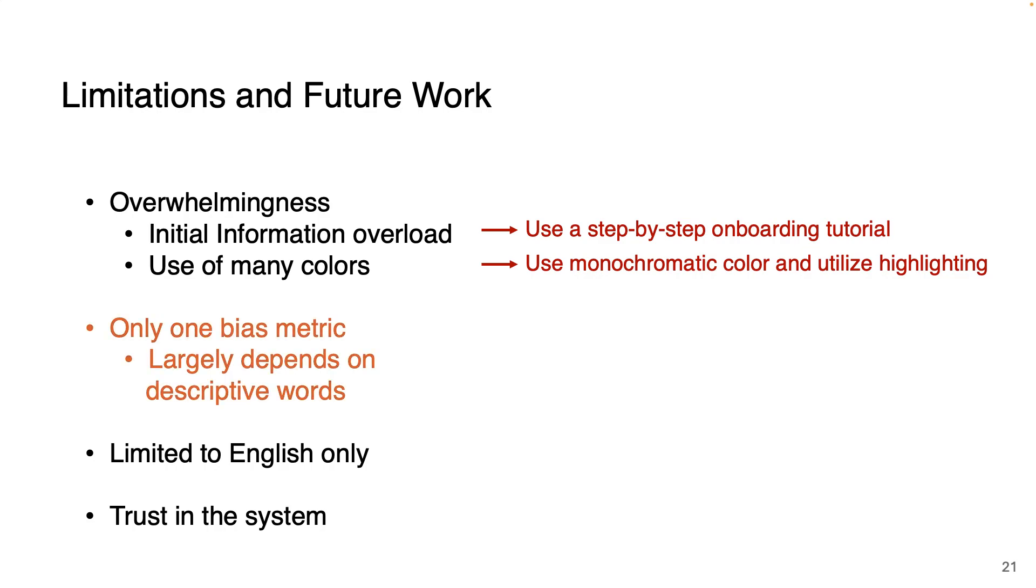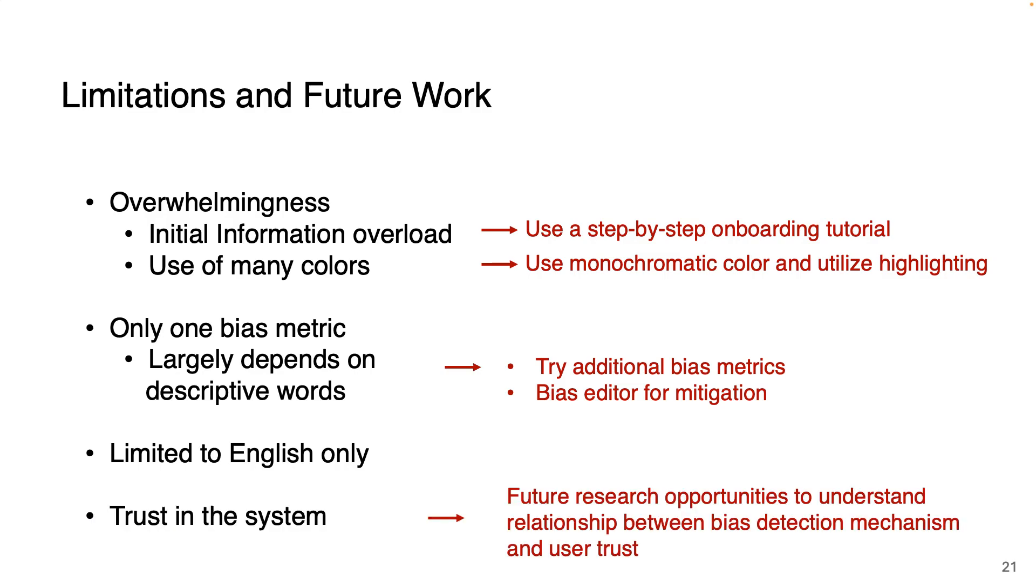The next limitation is our choice of bias metric. Our bias metric is largely dependent on the descriptive words. So future work can be trying out additional bias metrics. Also we have added the bias editor to mitigate this limitation so that the user can add or modify the bias descriptive words. The next limitation is that our tool is limited to English only. In future we plan to incorporate word embeddings from other languages in Style. And the last limitation is that when users found out biases using our system, their trust in the model was actually going down. So we believe some very good future research opportunities could be to understand the relationship between bias detection mechanisms and user trust surrounding word embedding or any other NLP models.